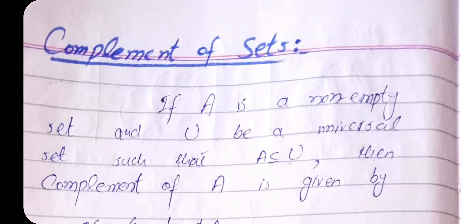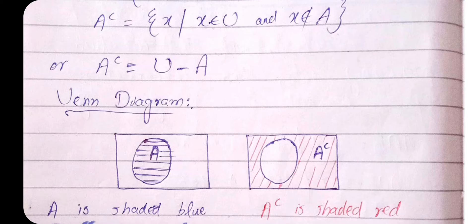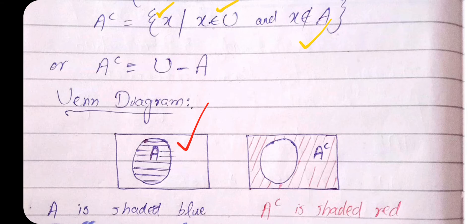Complement of a set: if A is a non-empty set and U is a universal set such that A is contained in U, then the complement of A, written A', consists of all elements x such that x belongs to U but x does not belong to A. On the Venn diagram, the square represents the universal set U, and the complement of A is the region outside of A but inside U.